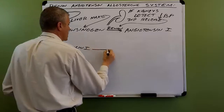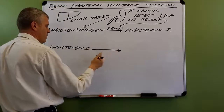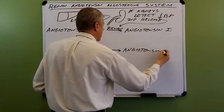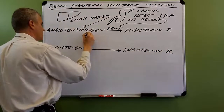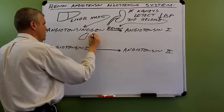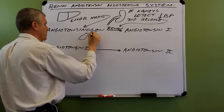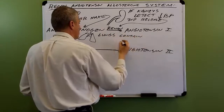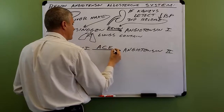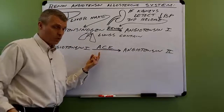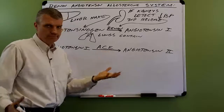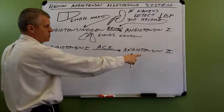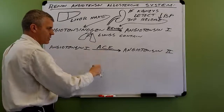Angiotensin-1 is converted into angiotensin-2 by an enzyme found mostly in the lungs — specifically in the microvasculature of the lungs. The lungs contain an enzyme called ACE, which stands for angiotensin converting enzyme. I love it when things are named for exactly what they do. So angiotensin-1 is converted into angiotensin-2 with the help of this catalyzing enzyme.